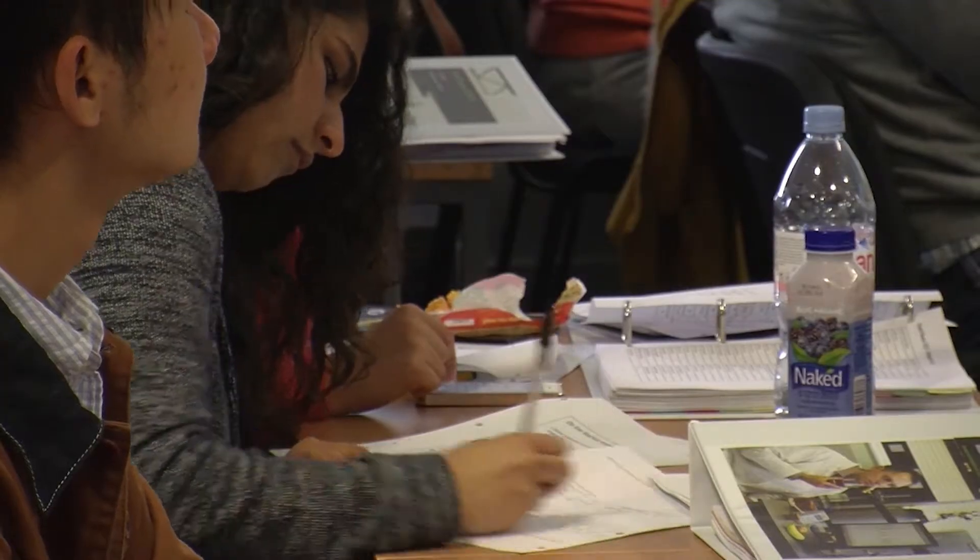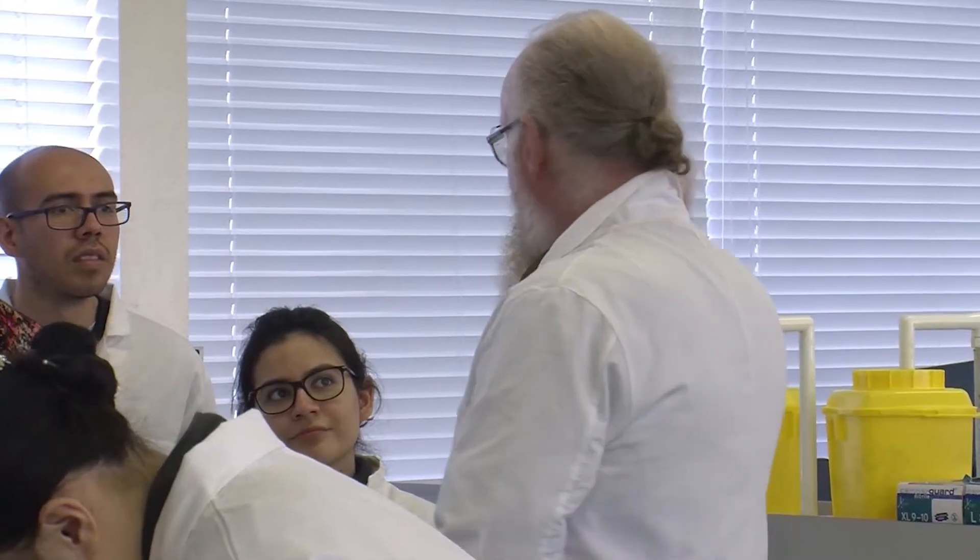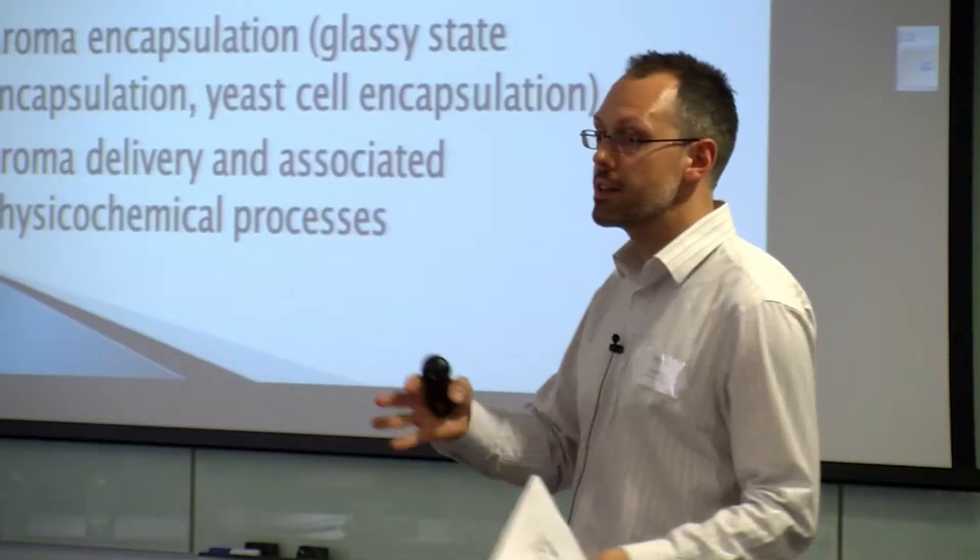Food Flavour is targeted at three principal areas: developing scientists within industry that have skills in one area but we want to transfer them over into food flavour; new scientists within industry that are fresh into the food area; and also academics within the university, students, and researchers.